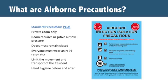Infected residents should be placed in a single room with directly exhausted air and greater than 12 air exchanges per hour, also called an airborne infectious isolation room. The door to this room must remain closed at all times except for entry and exit of staff. All health care providers and visitors should wear a fit-tested N95 mask when entering the room. All therapy and meals should occur inside the resident's room.